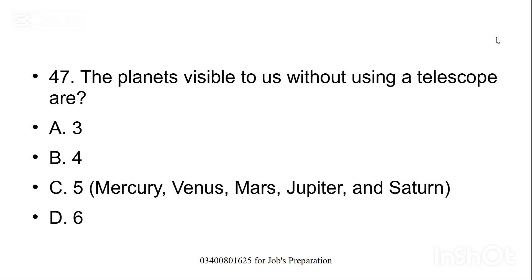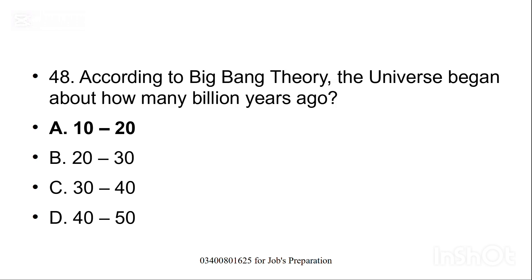The planets visible to us without using a telescope are, option C, five planets are visible to us without using a telescope. And which are these planets? These are Mercury, Venus, Mars, Jupiter and Saturn. According to Big Bang theory, the universe began about how many billion years ago? Option A is the correct option, 10 to 20 billion years ago.